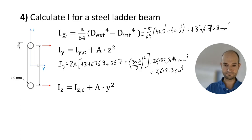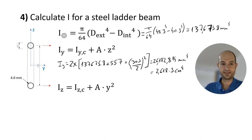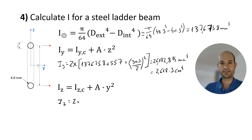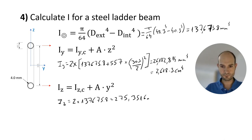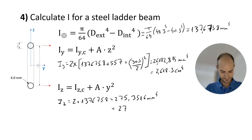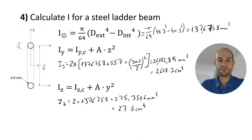For the Z-axis: the Z-axis crosses the centroid of both chords, so we only add up the second moment of area of each chord with no Steiner correction. We have twice the second moment of area of one chord. The second moment of area of the steel ladder beam about Z is 27.5 cm⁴.